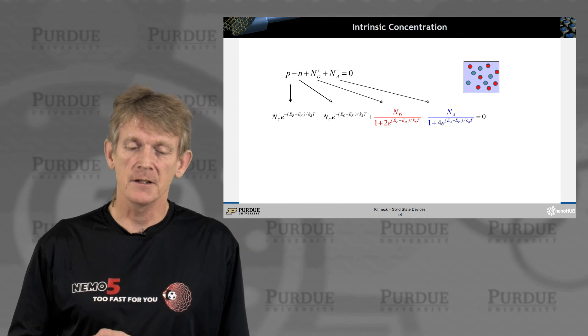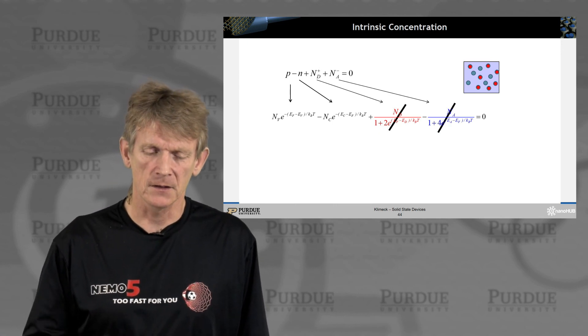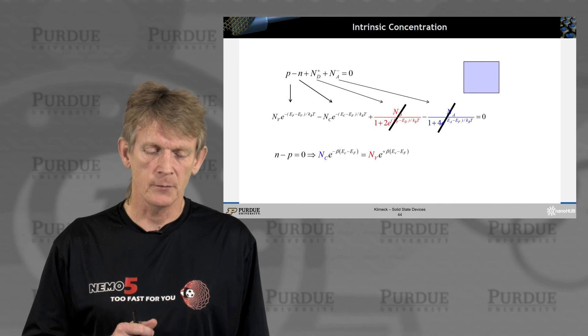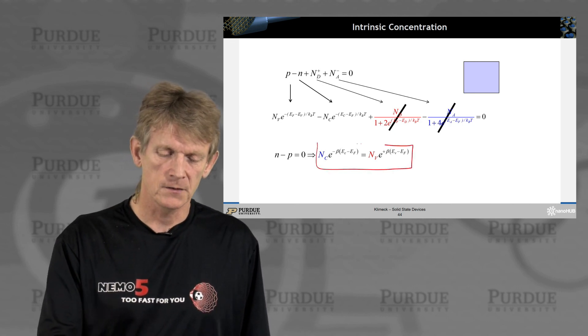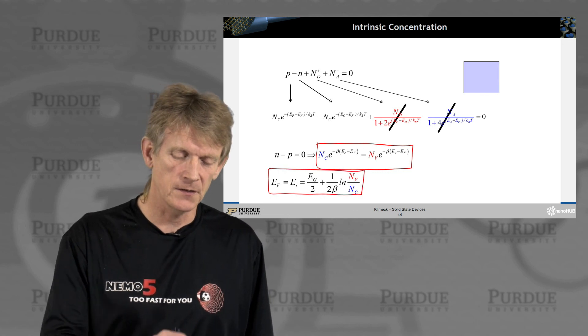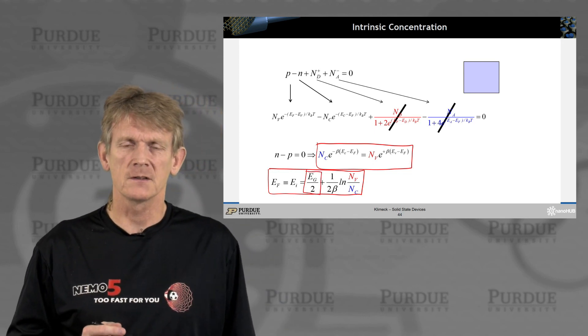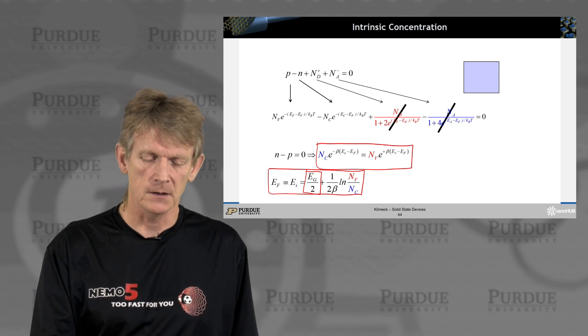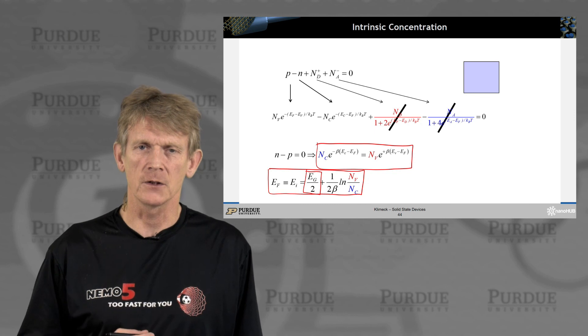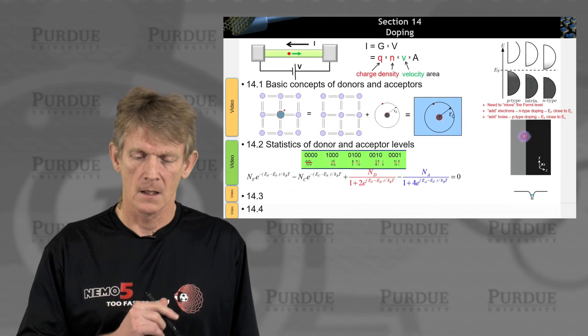So let's calculate an intrinsic concentration with this approach. Intrinsic means we don't have donors. So we cancel those expressions. We had seen, done this in the previous lecture already. The difference between N and P must be zero. So these coefficients, these expressions must equal to each other. And we had seen already the Fermi level is the intrinsic energy level that is roughly at mid-gap, Eg over 2. But if the two densities of states at the valence and conduction band are different, so they're not identical, then you have an up or down correction to the intrinsic Fermi level. That correction in general is very small. Ballpark, you can estimate that the Fermi level, intrinsic Fermi level is roughly mid-gap.